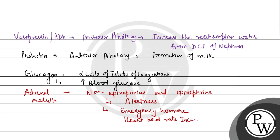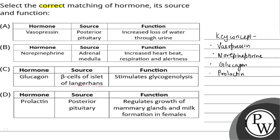Now let's analyze the question. For vasopressin — posterior pituitary as source is true, but the option says it increases water loss; actually it decreases water loss, so option A is incorrect. For norepinephrine — adrenal medulla as source is true, and it increases heartbeat, respiration and alertness, so option B is true.